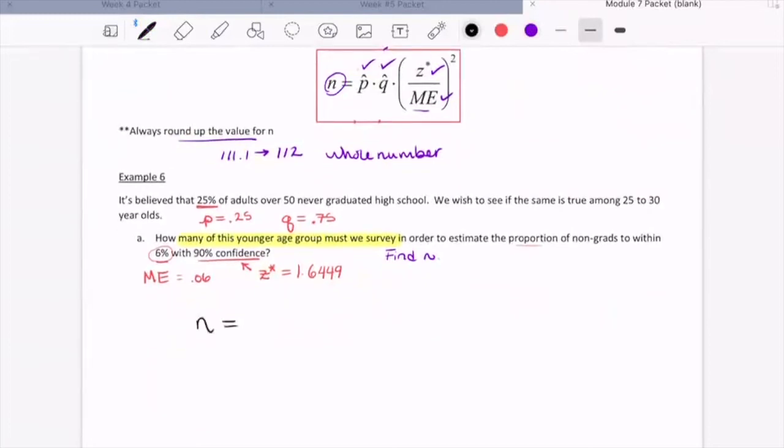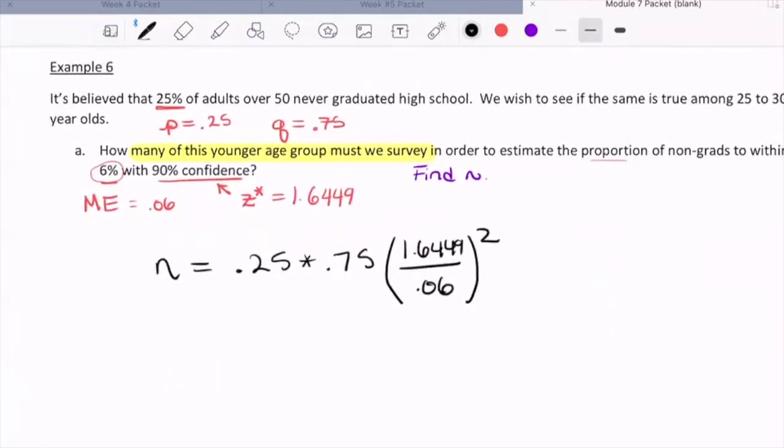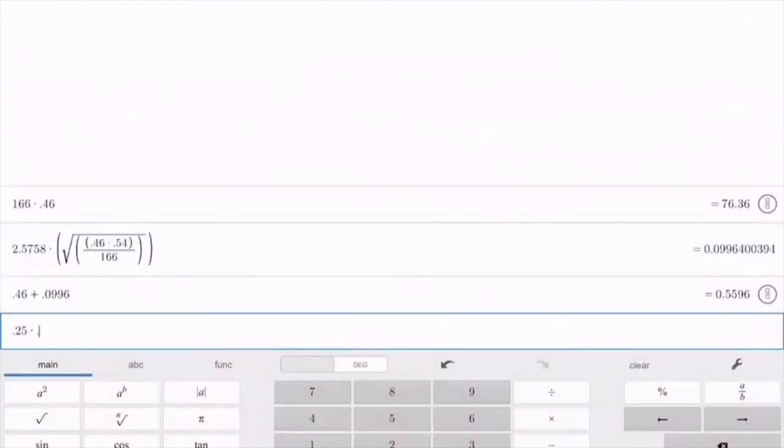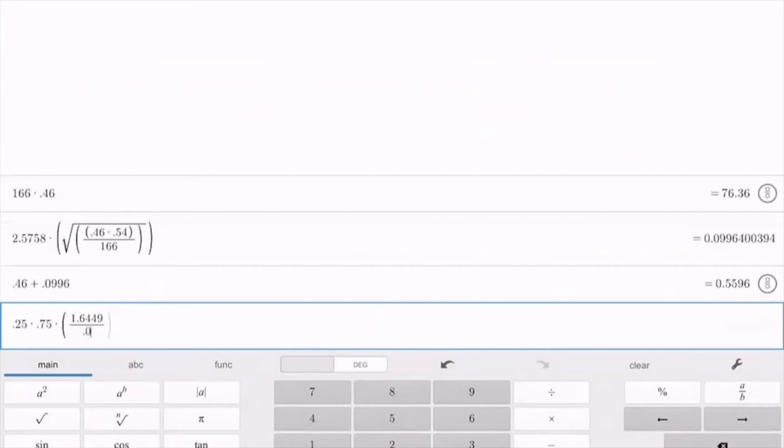So this means n is equal to p, 0.25 times q, 0.75, times Z star, 1.6449, over the margin of error, 0.06, all squared. At this point, please pause the video and work out this number in your calculator. This will help you to develop some practice using your calculator and making these kind of computations. So if we look together, we should be getting 0.25 times 0.75 times, and I'm going to use a lot of parentheses here, times 1.6449 divided by 0.06. I'm going to end my parentheses, and then I'm going to square that entire term. So we should be getting 140.92.